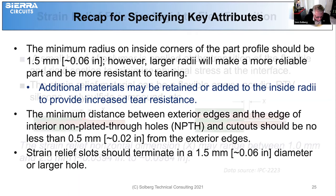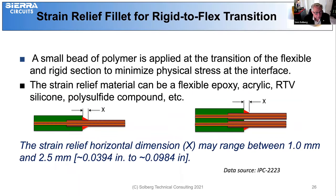We get into the issue of joining the flex and rigid sections of the board. We have to add a strain relief so that there's no stress on the flex circuit itself in bending. Usually a small bead of polymer is applied at the transition between the flex and the rigid, and that will minimize the physical stress at that interface.